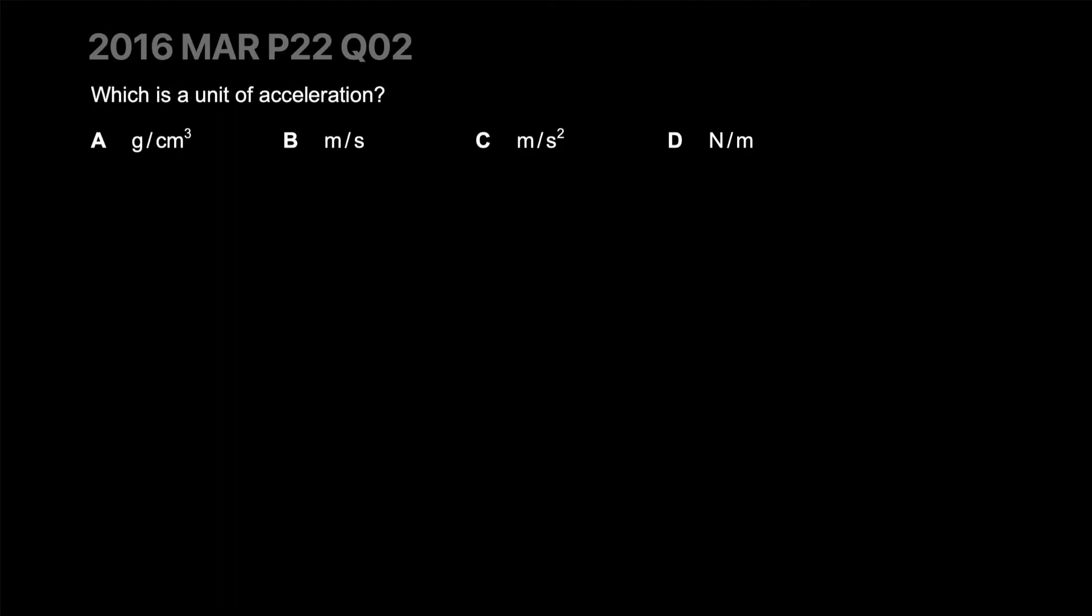What is the unit of acceleration? Velocity is meter per second, or distance traveled per time. Acceleration is velocity over time. This is meter per second divided by second again, which gives you meter per second squared. C.